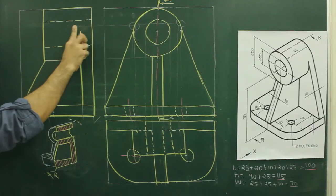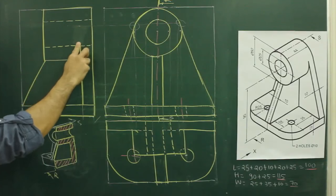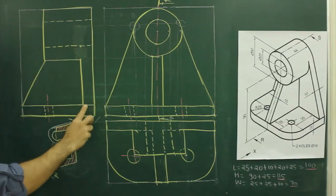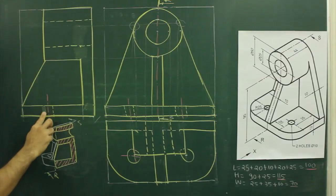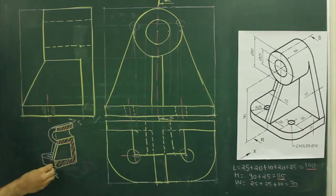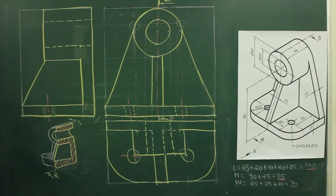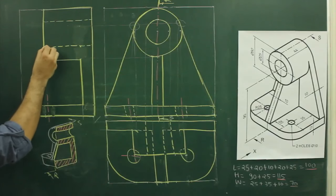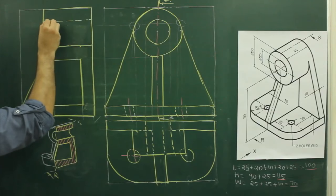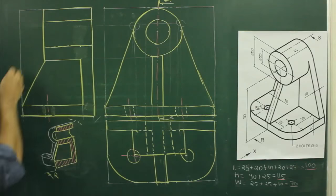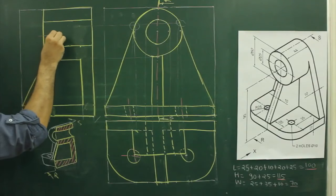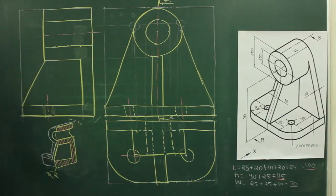This portion will be erased and will go away — these two dotted lines will also go away, because this cutting plane line is not passing through the circle. The circle is behind, so we need to show only the center line for that, and these two lines will become that center line.